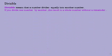Now what's the meaning of the word divisible? Divisible means that a number divides equally into another number. So if you divide this number by another number, the result is a whole number without a remainder. In other words, if you do the division, the remainder is going to be 0.